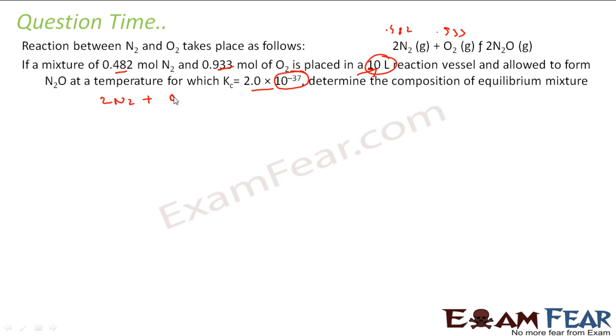So if you have 2N2 plus O2 gives 2N2O, let's suppose initially it was 0.482 and this was 0.933. I assume that at t equals equilibrium, some x mol of this is used. So this is 0.482 minus x. If x mol of N2 is used, x by 2 mol of O2 will be used, stoichiometric thing. You can see that minus x by 2. And if x mol of N2 is used, x mol of N2O will come. So let's suppose this is equilibrium. But since this Kc is very small, x will be very small. Why? Because if the Kc is very small, that means the reaction hardly happened. x is very small.